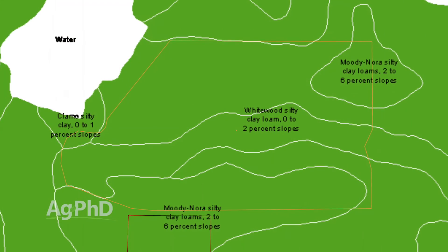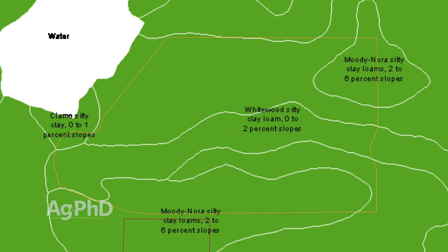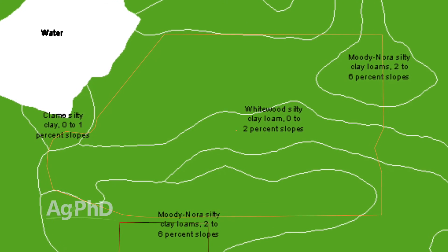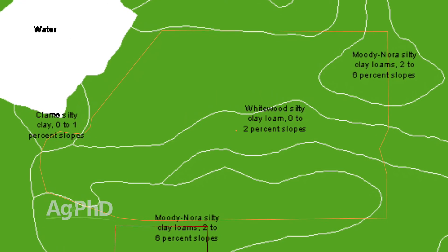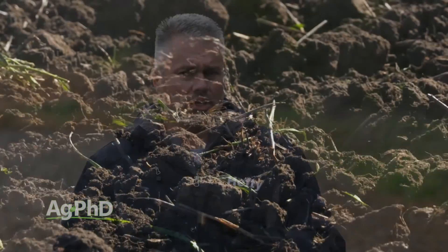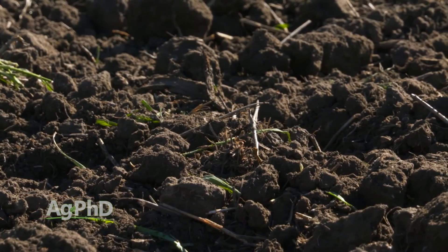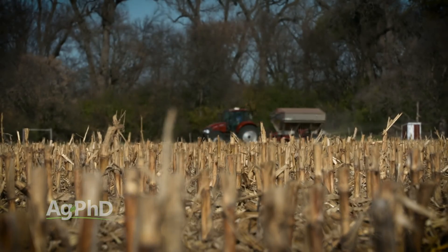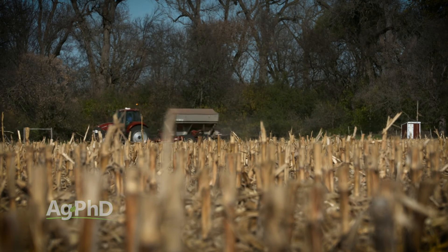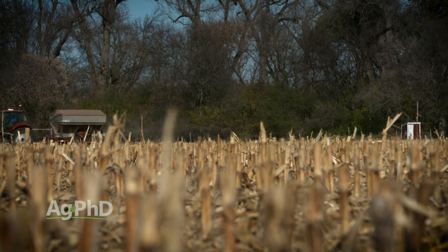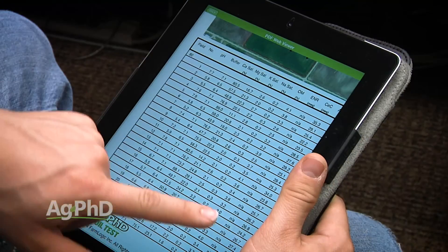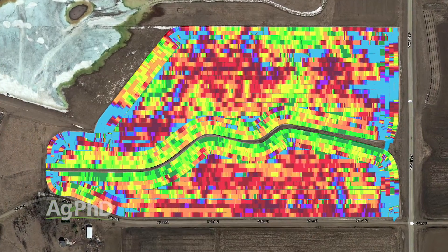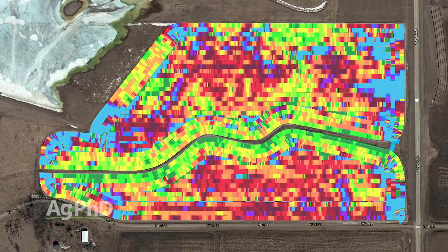A lot of people say they're going to use soil type maps to make their variable population map. You can certainly do that, but what we've found over the years is, number one, the soil type maps aren't super accurate. And number two, you can change a soil type over time using good fertility practices and other good agronomic practices. So I'd lean more toward looking at your soil tests and yield maps rather than just looking at a soil type map.